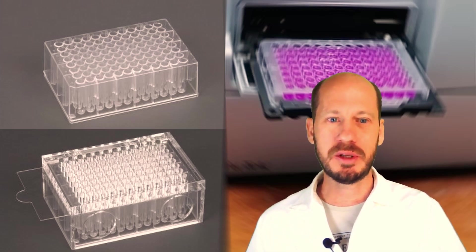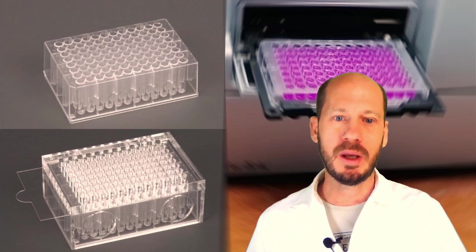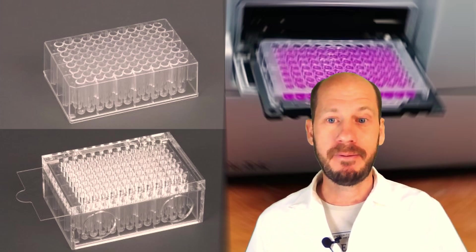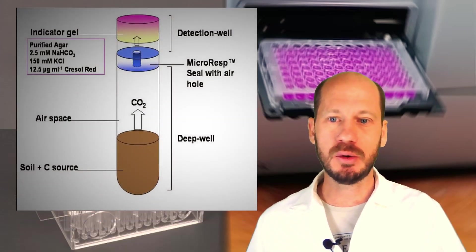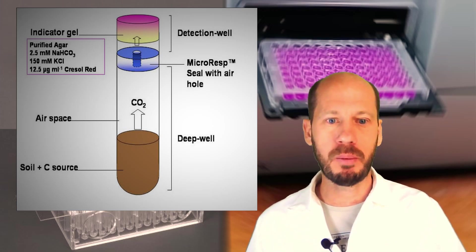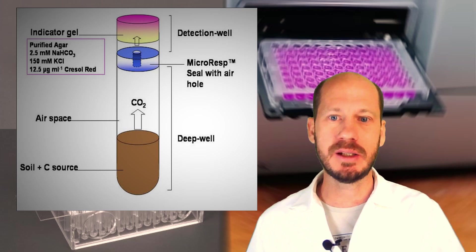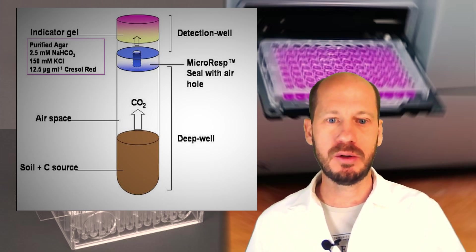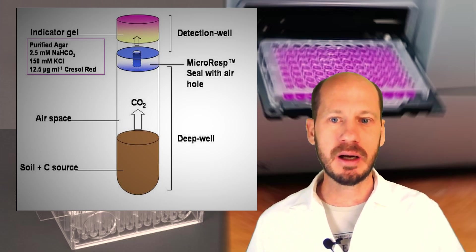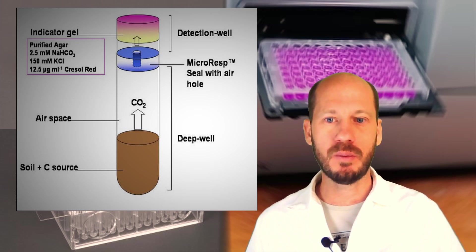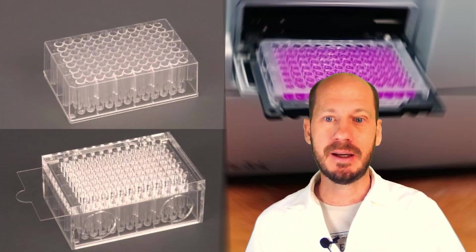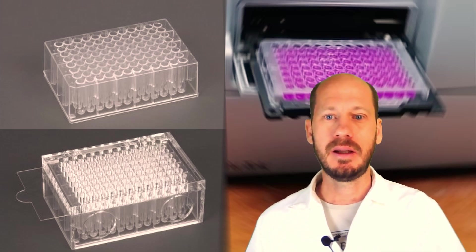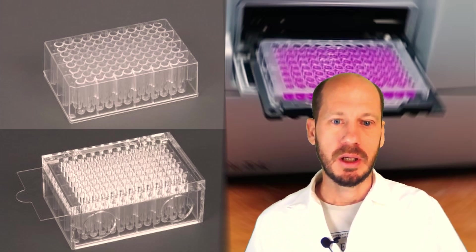This respiration method is based on having a deep well plate on the bottom. We fill each well with a similar amount of soil and place the CO2 trap plate on top, then seal it. Each deep well connects to one CO2 trap from the microplate on top. The method is based on pH change—it's an agar with cresol red that will change color based on pH. As it becomes more acidic due to the dissolution of carbonic acid, it becomes more pinkish.